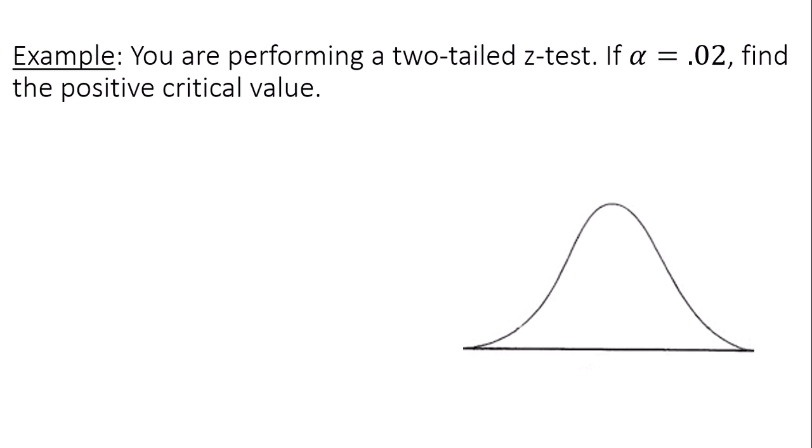In my example, we are performing a two-tailed z-test, so we're dealing with the standard normal distribution that has a mean of 0, standard deviation of 1. If alpha equals 0.02, find the positive critical value.